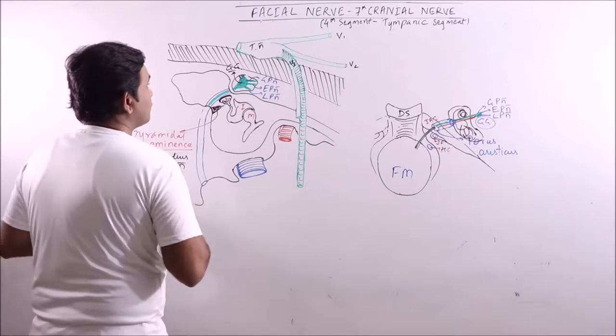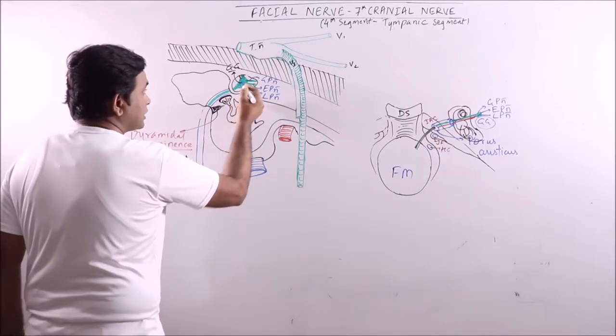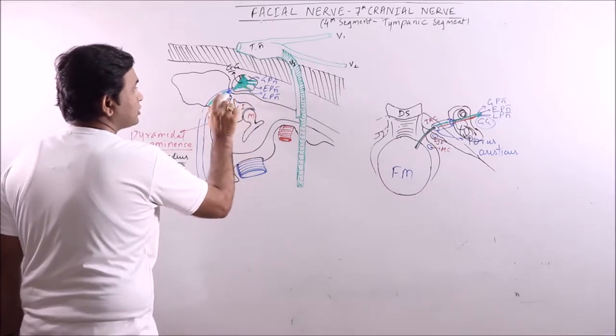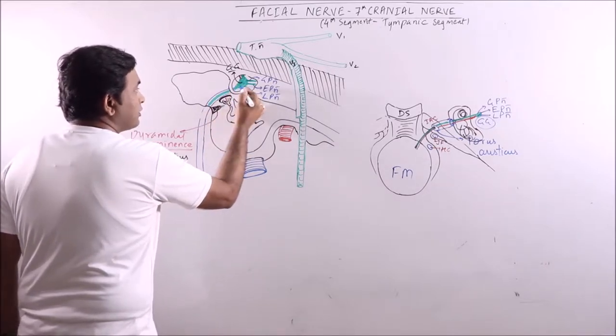The fourth segment, we know the third segment ends at geniculate ganglia. The fourth segment of the facial brain nerve starts from the geniculate ganglia.